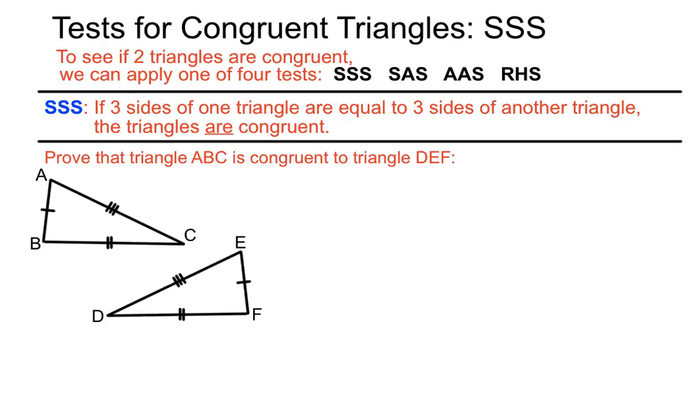This question asks us to prove that triangle ABC, that top triangle, is congruent to triangle DEF. Now we've got a lot of information about the sides here by the markings on it. You'll notice that AB has one marking on it, and EF also has one marking on it. So that's showing us that those two sides are equal, and the same with the other matching markings there.